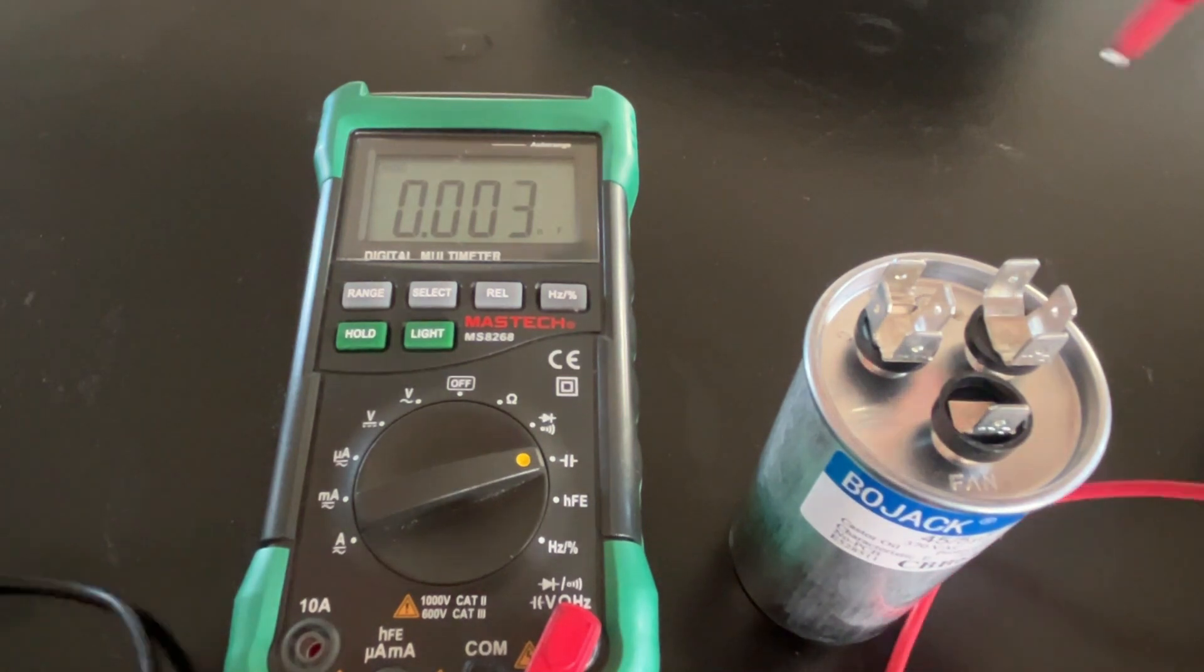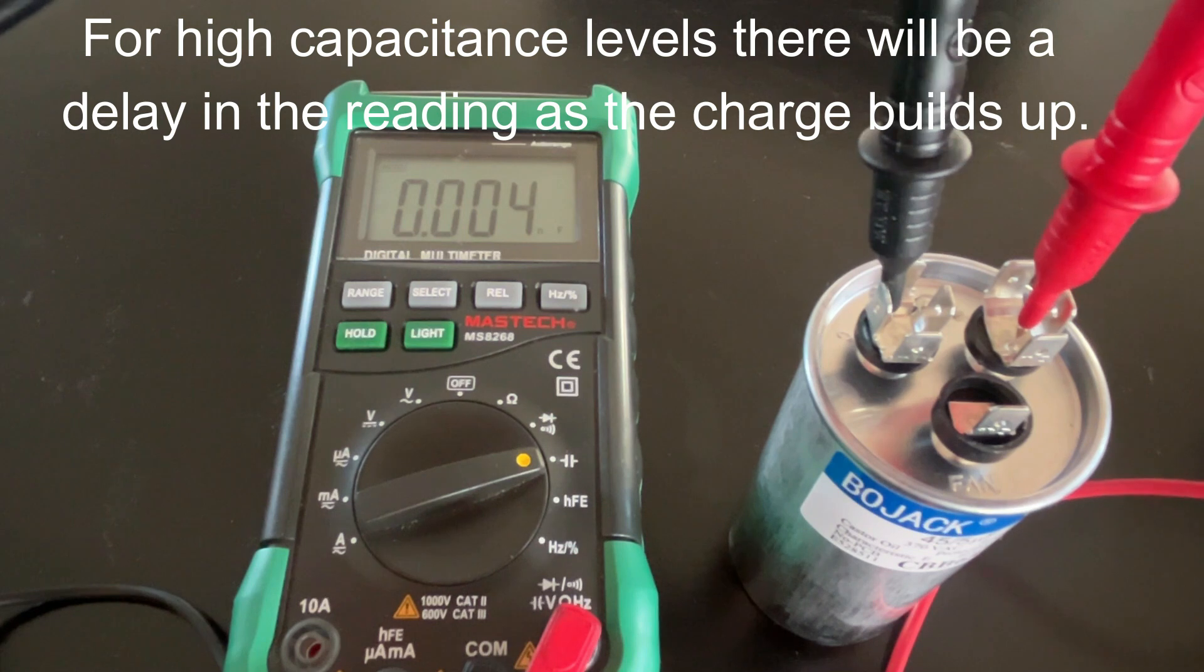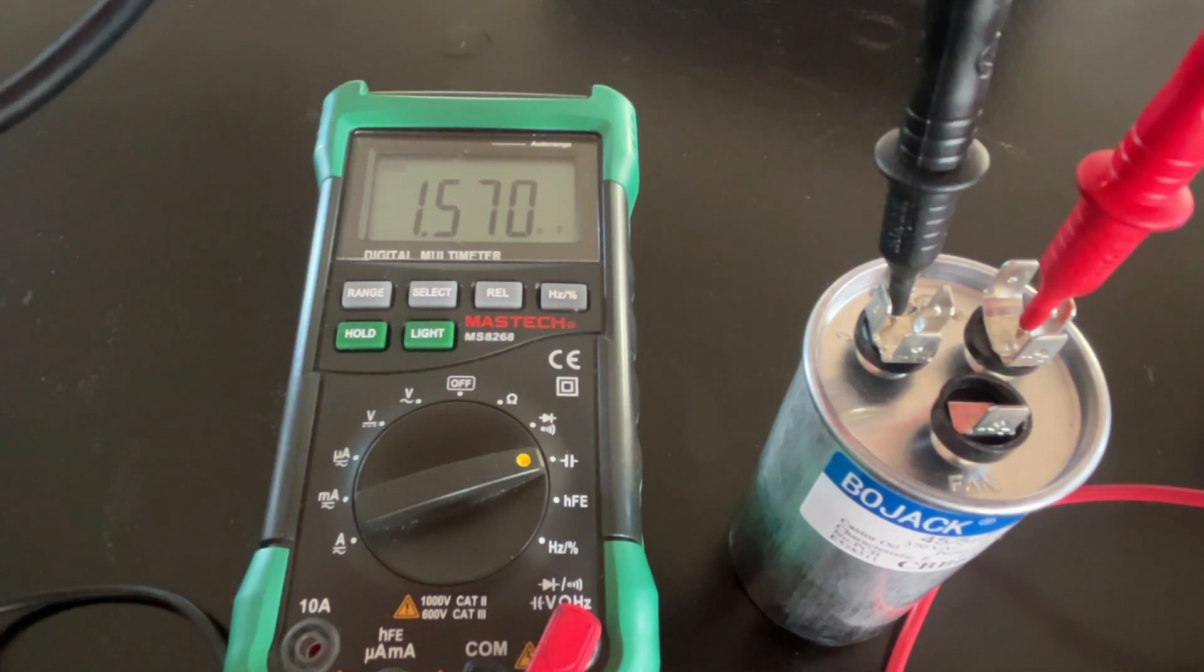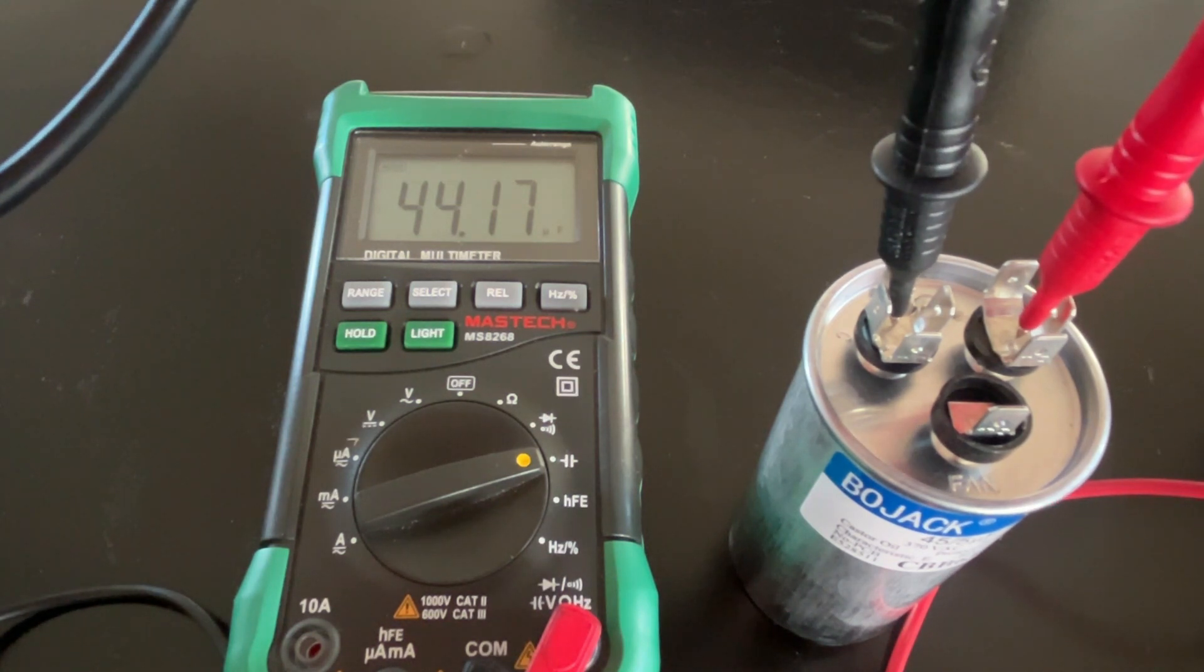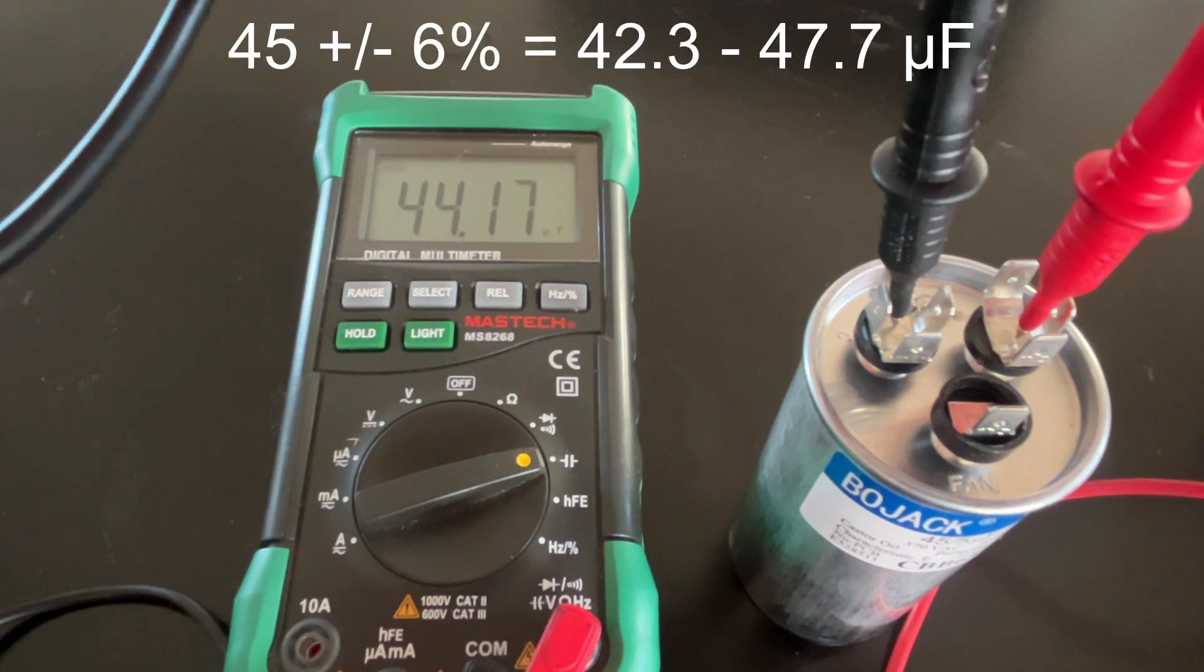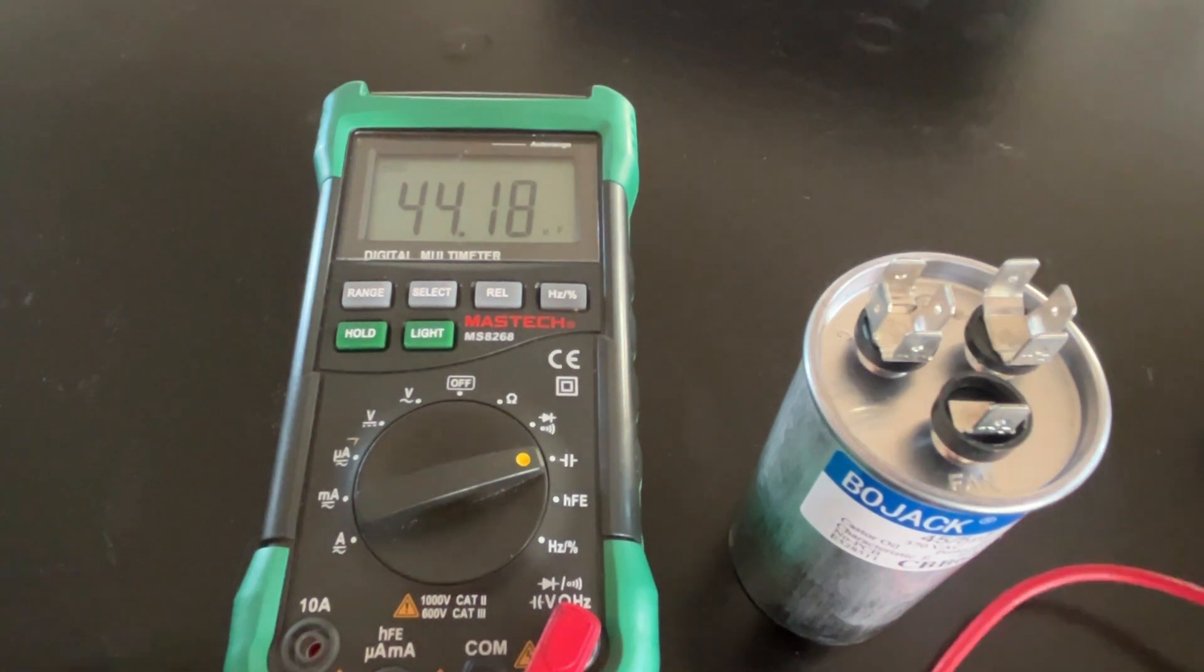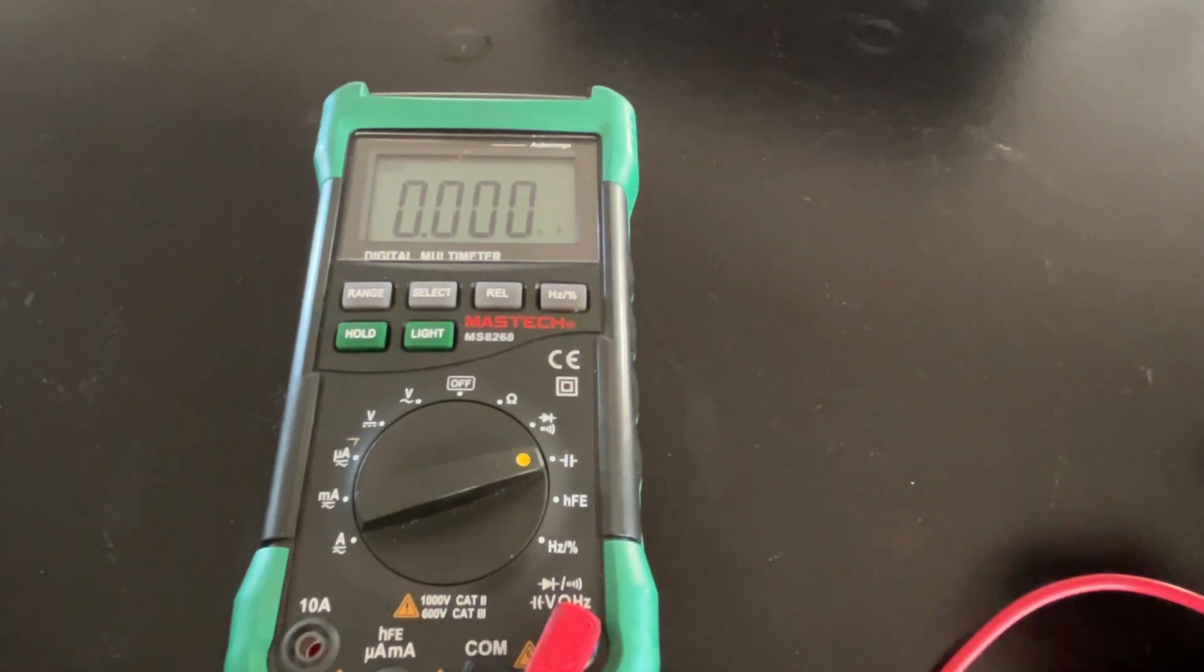All right, now let's check the compressor side of the capacitor. 44.17—so that is within six percent of 45, so this capacitor is good.